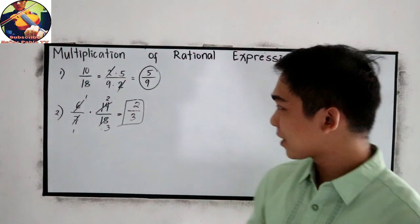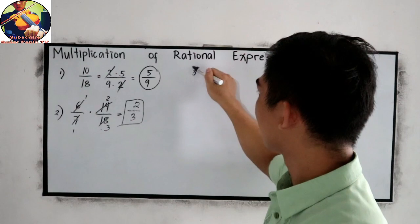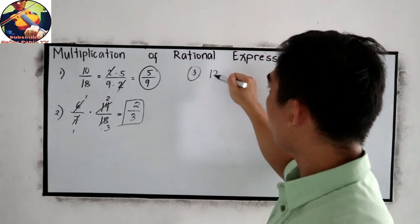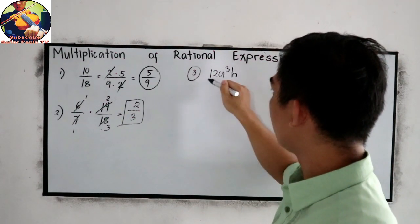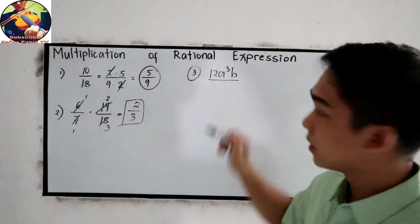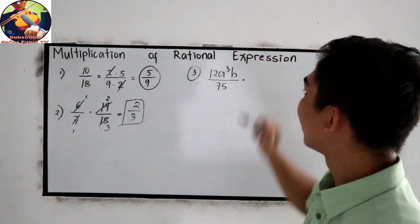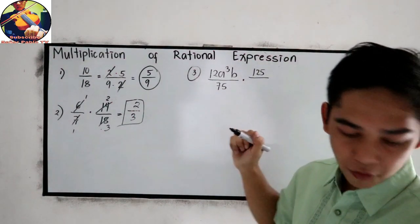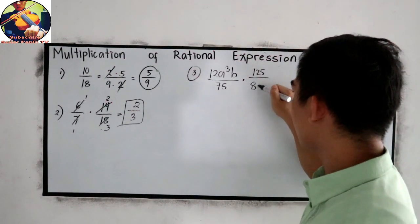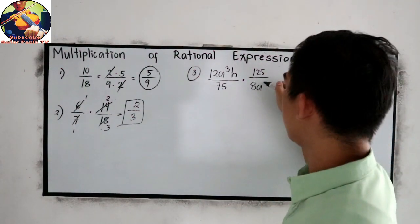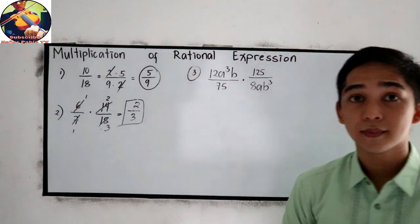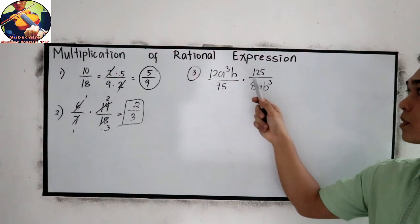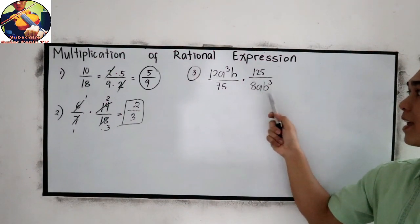Let's have example number 3. 12A³B all over 75 times 125 over 8AB³.